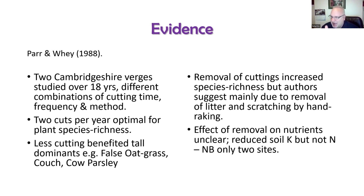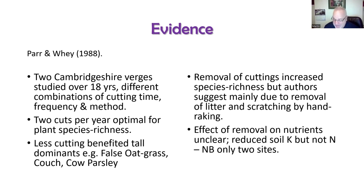If the soil isn't getting that composting effect, big plants like hogweed often struggle because there isn't enough moisture retention in the soil at certain times of year. But if you're composting the soil and improving it from a gardening perspective, you're enabling those big competitive plants at the expense of the smaller species.